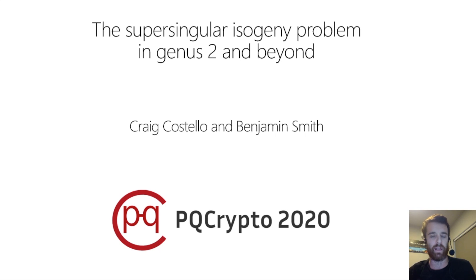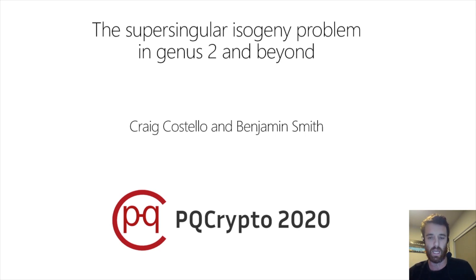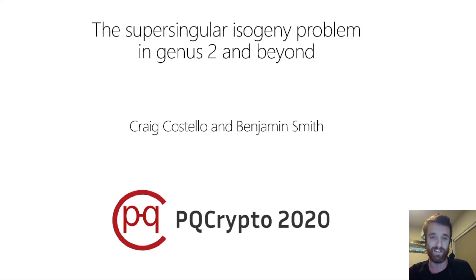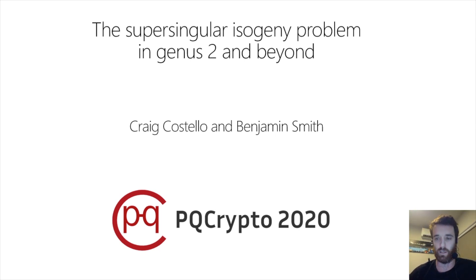This talk is about an algorithm to solve the supersingular isogeny problem in genus 2 and beyond. This is joint work with Ben Smith, and this is the pre-recorded long version — the 25-minute version. Ben will be giving the live version during the conference. If you have questions or comments, feel free to tune in to Ben's talk and direct them to him, or email either of us.